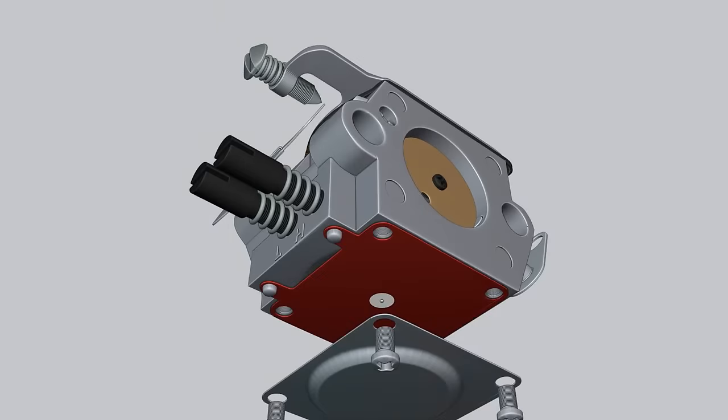Another membrane, located at the bottom of the carburetor, replaces the role of the float we are used to.